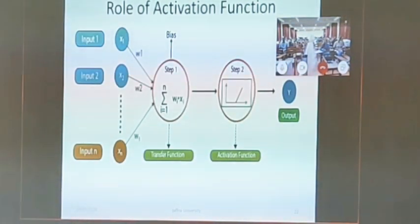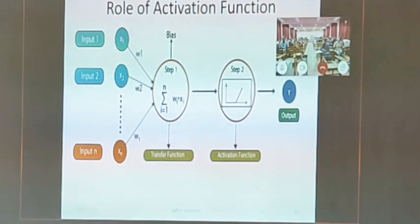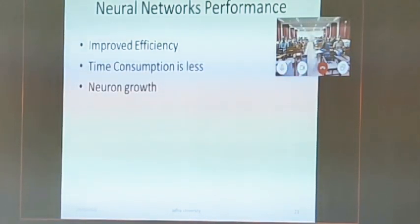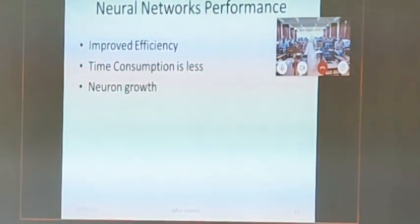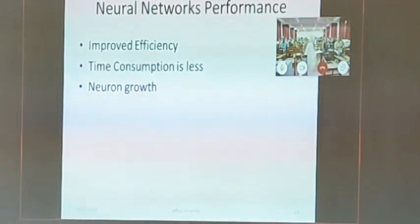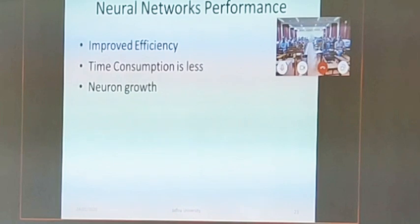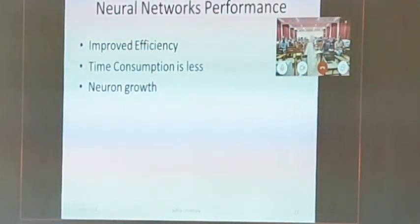The neural network is executed in this way. The main performance advantage of neural networks compared to traditional classification methods is input efficiency — the time taken for executing a process is totally less. However, it will be generating more neurons, which can be considered a disadvantage of this particular method.